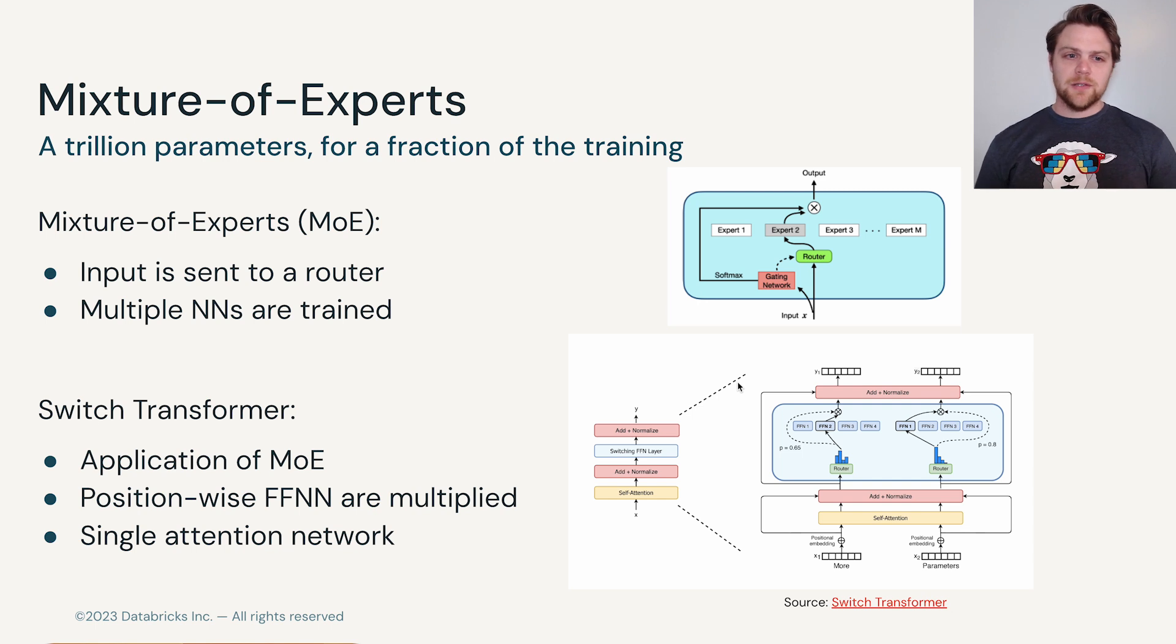The difference with mixture of experts is that an input is sent to a piece called a router, and the router is trained and learns how to send one input to a different type of expert. This doesn't have to be a large language model—it can work in different types of machine learning and deep learning applications—but in this situation we're going to focus on mixture of experts in the context of large language models.